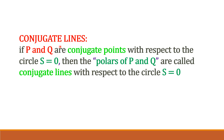The next definition is conjugate lines. Here we observe that the points P and Q are conjugate points with respect to any circle s=0. Then the polars of P and Q are called conjugate lines with respect to the circle s=0. So, if we take any two conjugate points, the polars of those conjugate points are the conjugate lines with respect to the given circle s=0.